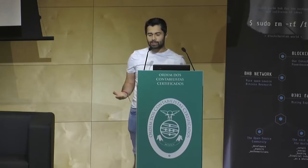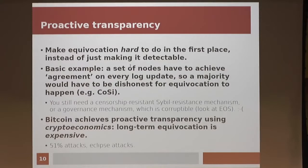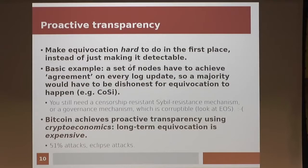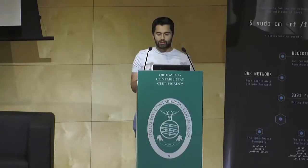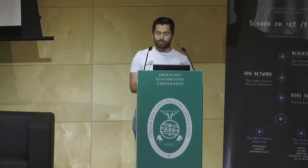The other approach is proactive transparency: making equivocation difficult to do in the first place, instead of just making it detectable. A basic way might be using a threshold signature scheme or consensus mechanism so that many people must sign every updated log Merkle root. But this doesn't answer how you select those people in a Sybil-resistant way—you still need a governance process. Bitcoin achieves this using crypto-economic incentives: creating two different views of the blockchain would require either a 51% attack or an eclipse attack, which is quite expensive.